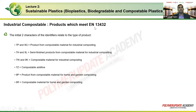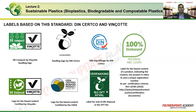For industrial compostable products, the relevant European standard is EN 13432. The first two characters in the certificate indicate the material type: 7P and 7G refer to products from compostable material for industrial composting, while 7H and 9L indicate semi-finished products made from compostable material for industrial composting. Various global certifications and labels exist — in the European Union, TÜV provides the OK Compost certification, and Vincotte has its seedling logo standard.